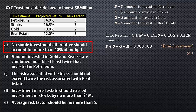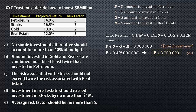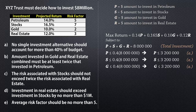For part A of the guidelines, no single investment alternative should account for more than 40% of the budget. So for petroleum, we can write P is less than or equal to 0.4 times (P plus S plus G plus R), since this is total investment. But since P plus S plus G plus R equals 8 million, we can simply replace this by 0.4 times 8 million, which we can rewrite as P less than or equal to 3.2 million. We do the same for stocks, for gold, and for real estate.